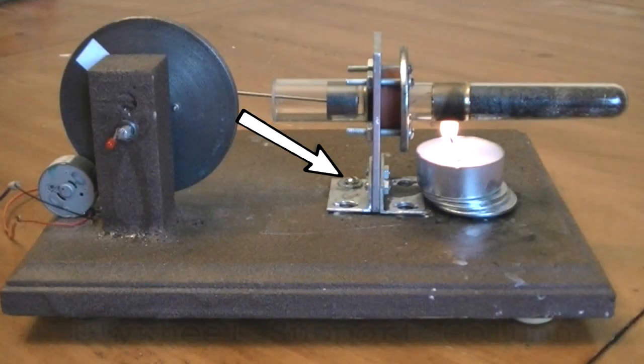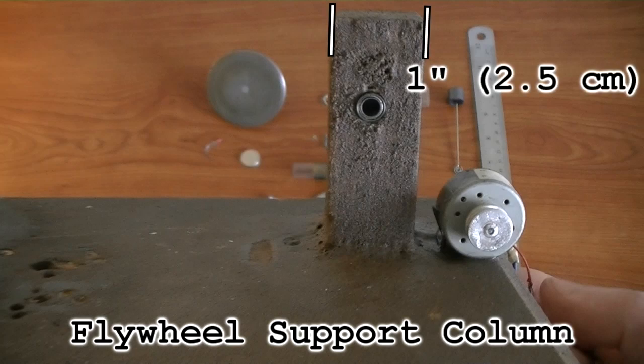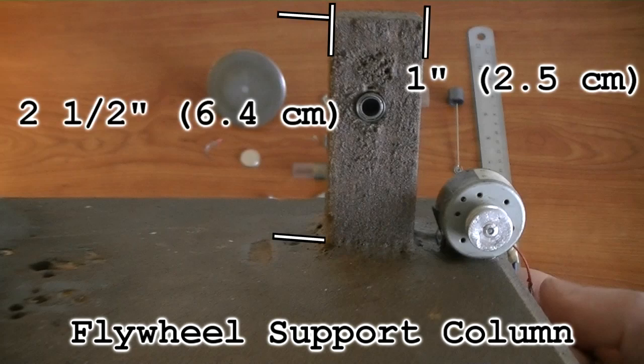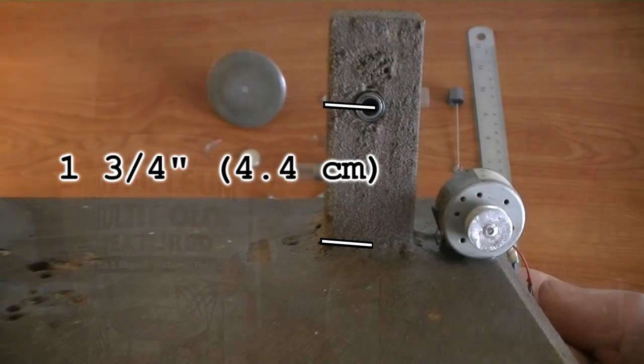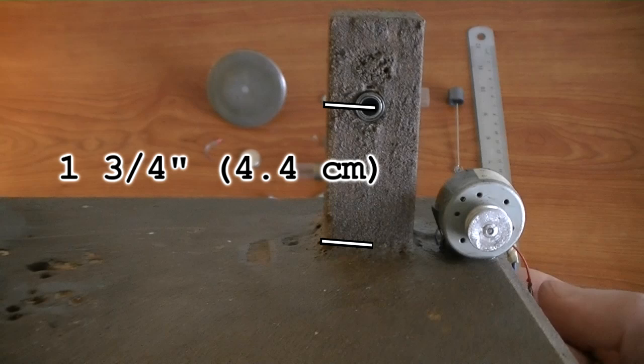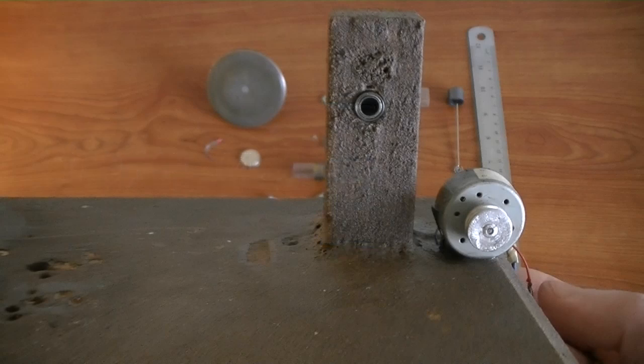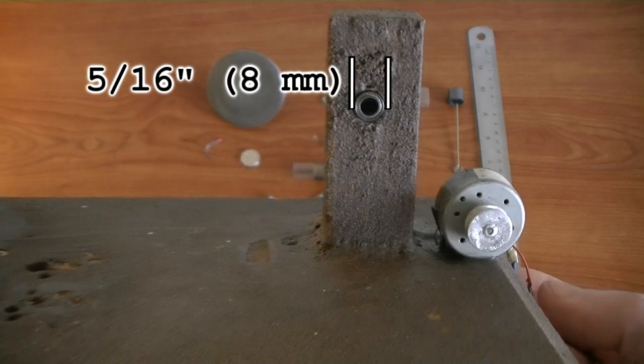The flywheel support column is a piece of wood that measures 1 inch by 1 inch by 2 and a half inches. The whole base has been spray painted with textured spray paint. The center of the hole drilled through the flywheel support column is 1 and 3 quarters of an inch on the base. The diameter of the drilled hole is 5 sixteenths of an inch.